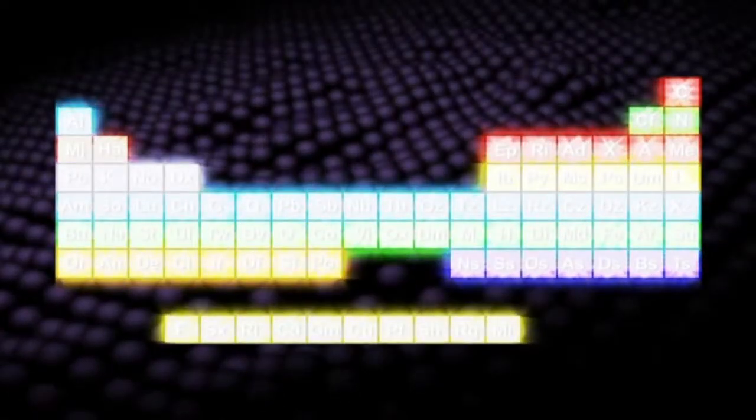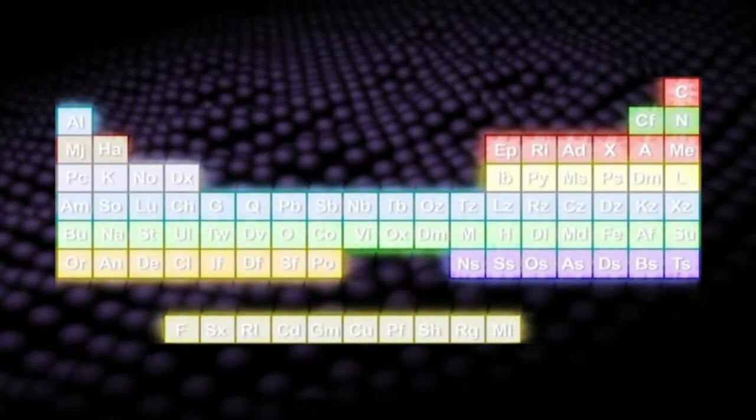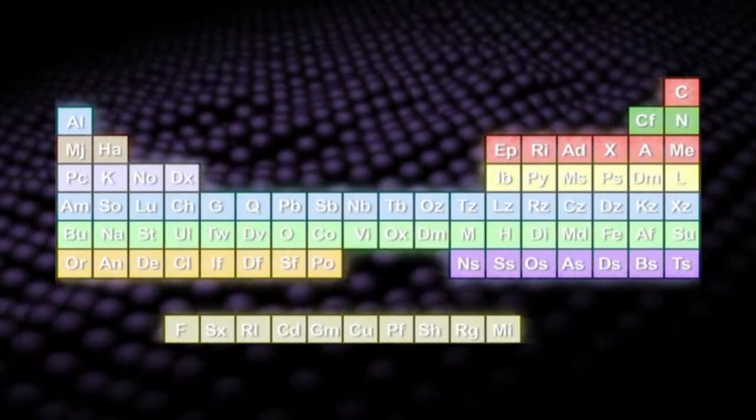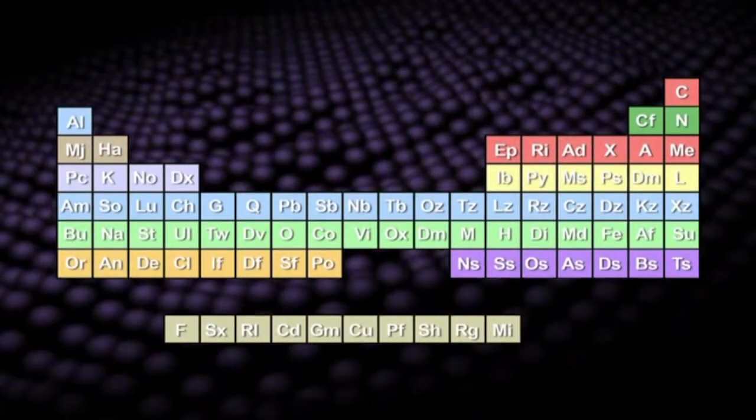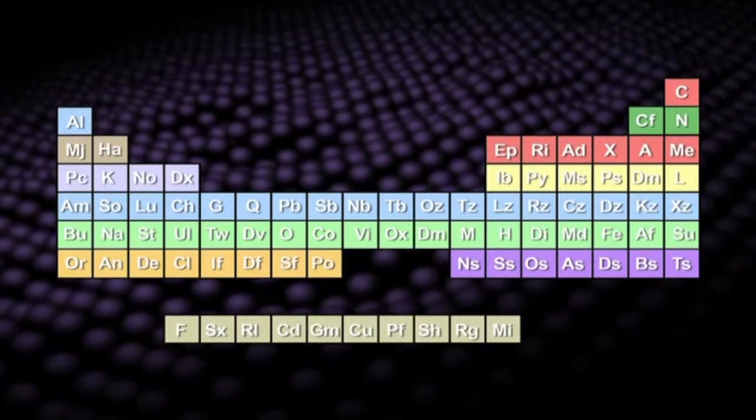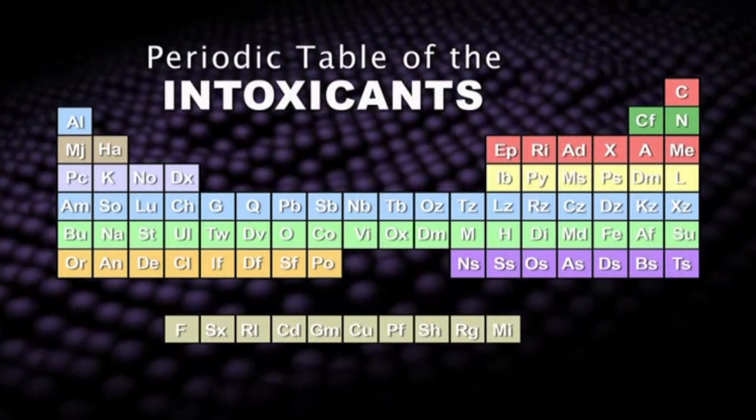If we were to lay out all the drugs that release dopamine, we might arrange them the way chemists arrange atoms into the periodic table of the elements by their class, structure, and properties, except we will call our arrangement the periodic table of the intoxicants.